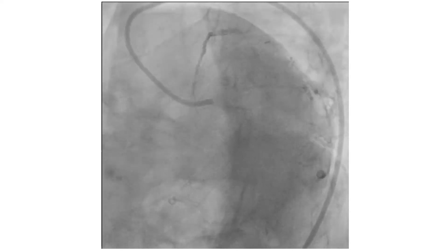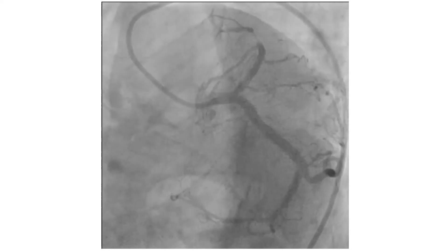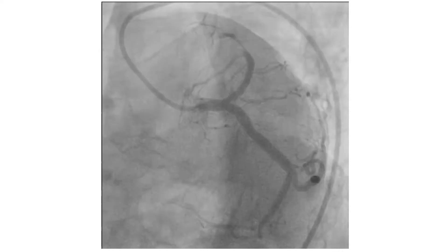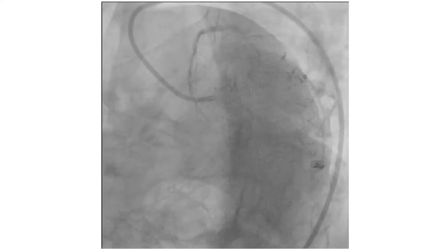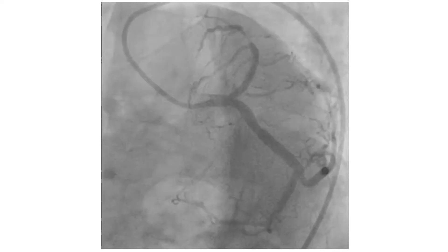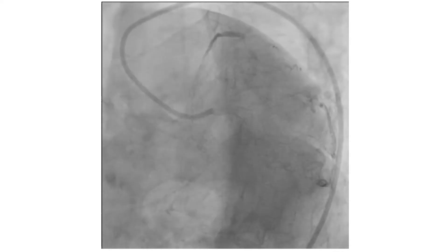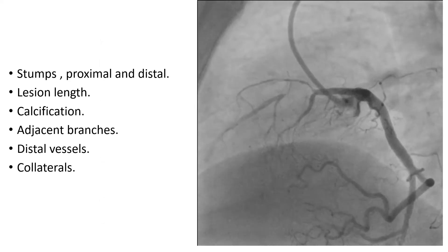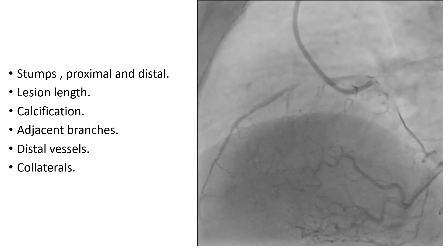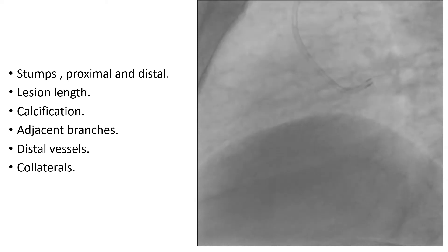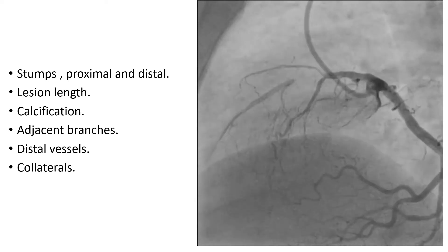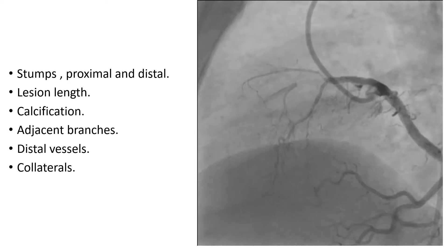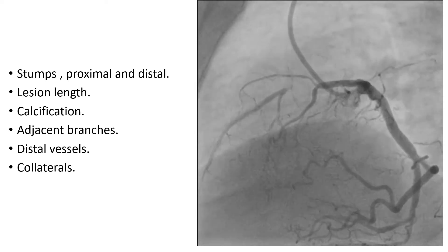We have seen some cases where the operator tried hard to enter a smaller branch, thinking it was the course of the main artery. This is why multiple views are needed to clarify the stump — both proximal and distal — the lesion length, calcification, adjacent branches, the distal vessel, and the collaterals.